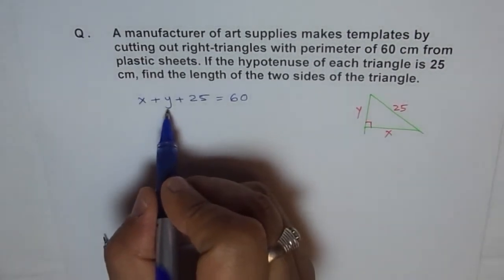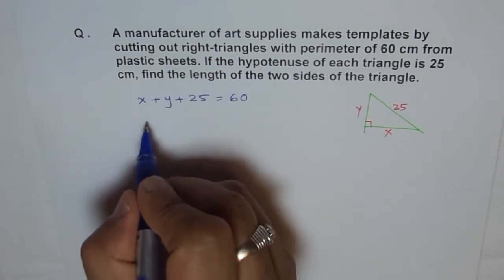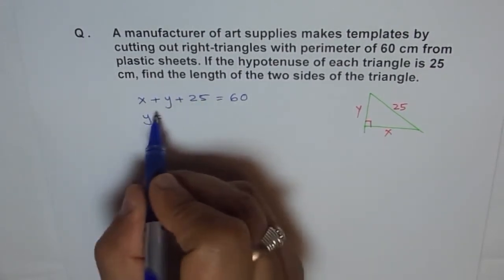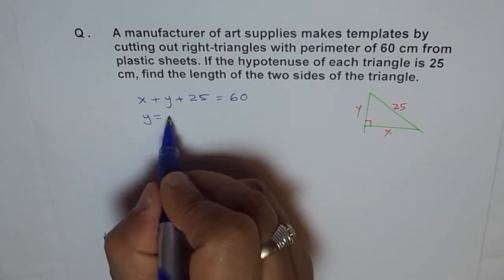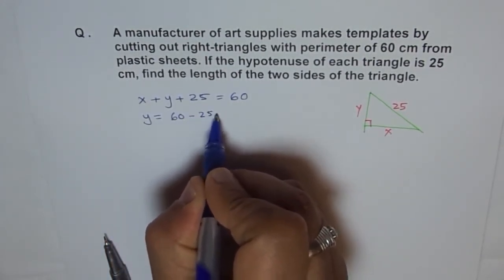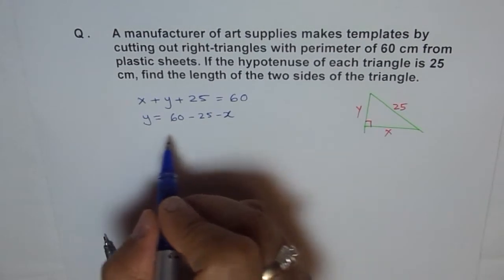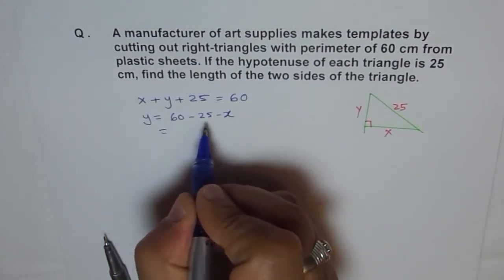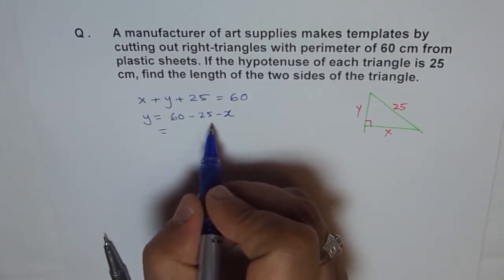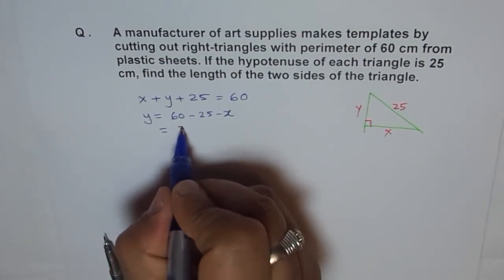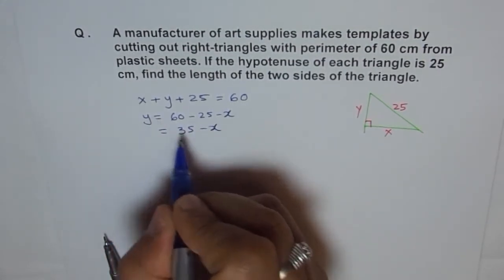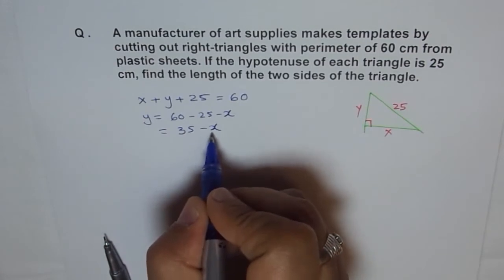We can write y in terms of x: y equals 60 minus 25 minus x, which is 35 minus x. So that is y in terms of x.